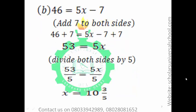Example 2: 46 is equal to 5x minus 7. We are focusing on the right-hand side because that is where we have the unknown. What can you perform on minus 7 to turn it to zero? You need to add 7 to it. If you add 7 to minus 7, you will have zero. So, add 7 to both sides: 46 plus 7 is equal to 5x minus 7 plus 7.